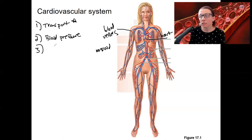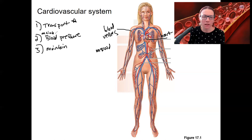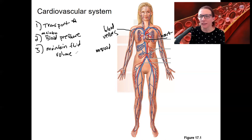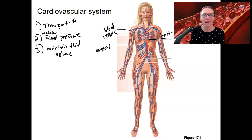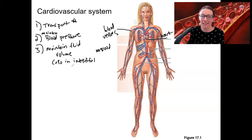The last function is closely related to blood pressure but a little different: maintaining fluid volume. Part of fluid volume is in the blood vessels, so it overlaps with blood pressure. However, fluid volume also needs to be maintained everywhere else — in the tissues, the interstitial spaces, and actually inside the cells. You need your cells to stay full of fluid.